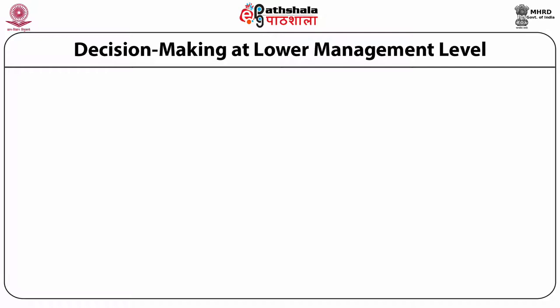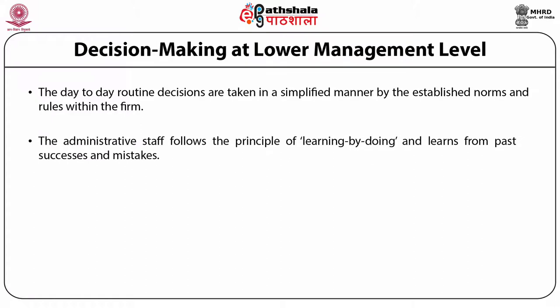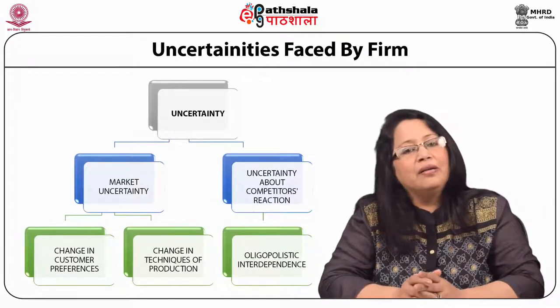Decision making at lower management level. The day-to-day routine decisions are taken in a simplified manner by the established norms and rules within the firm. The administrative staff follows the principle of learning by doing and learns from past successes and mistakes. Failed methods are not repeated.